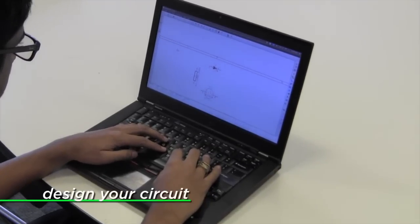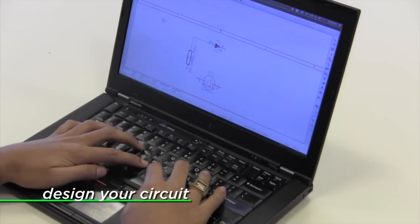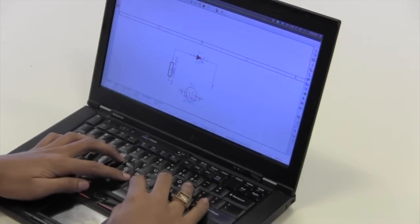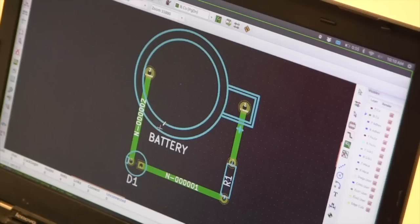We start off by drawing what we want to make on the computer. This means that we can check that our design is good and also helps us to get an accurate final circuit that all of our parts will fit into. This also allows us to easily change and print the circuit.